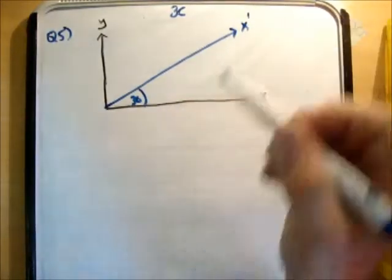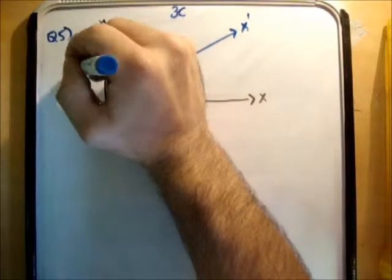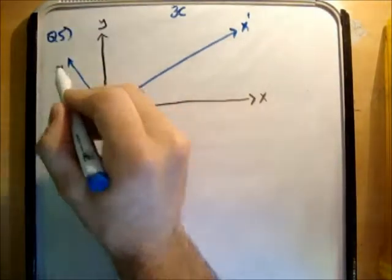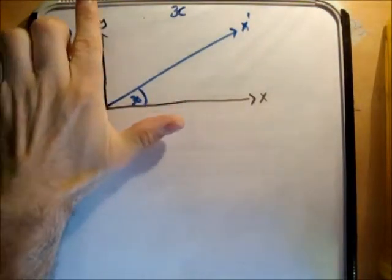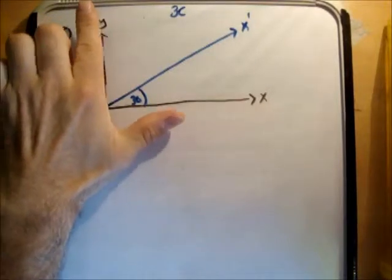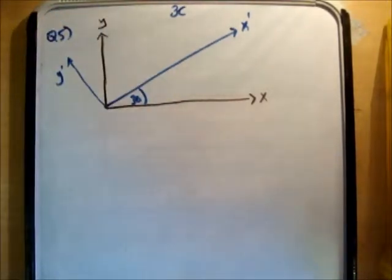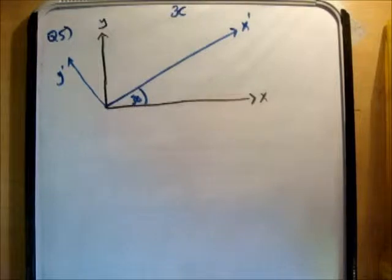I'm going to call the incline my new x prime axis and perpendicular to that I'm going to draw my y prime axis. So what I've done here is I've rotated my x, y plane anticlockwise at 30 degrees. That's very straightforward, we've done that in the past.